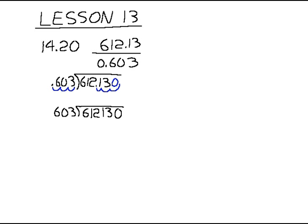603 goes into 612 one time, so we put a 1 up in the quotient. Bring 603 down and subtract — you get 9. Carry the 1 down from above. 603 goes into 91 zero times, but it goes into 913 one time. Subtract 603 from that.